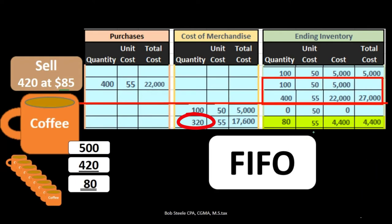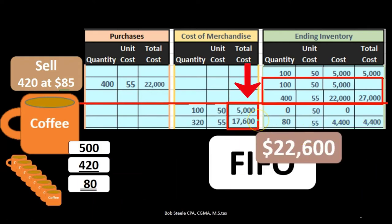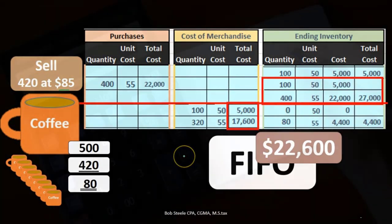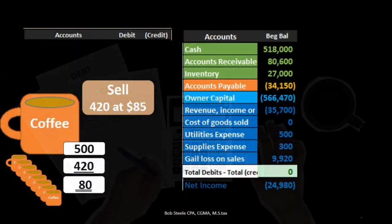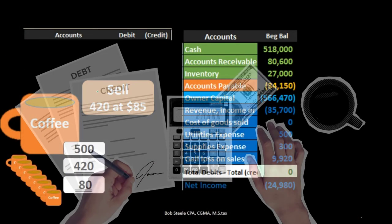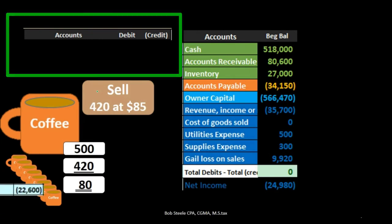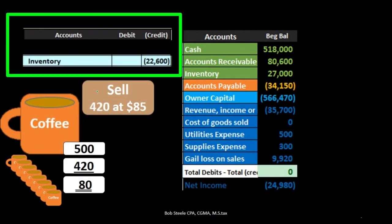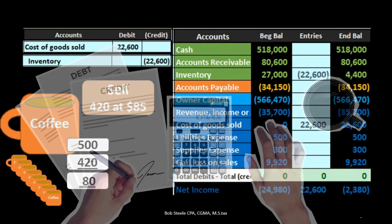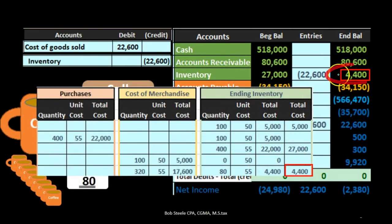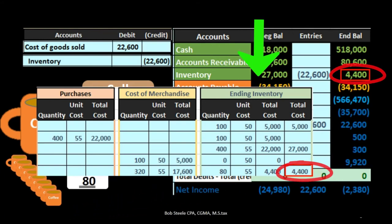The cost of goods sold for this transaction is $5,000 plus $17,600, equaling $22,600. To record this transaction — the inventory side — we reduce inventory to $4,400 and record the related expense as cost of goods sold. What remains in the trial balance or balance sheet after this transaction is that same $4,400, which is on our inventory worksheet under the FIFO method.